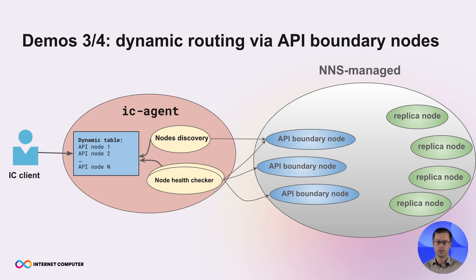Now, although routing traffic through API boundary nodes manually is possible, it's not convenient. API boundary nodes can be added and removed from the IC ecosystem. Their health condition is subject for change, and their latency can vary strongly.